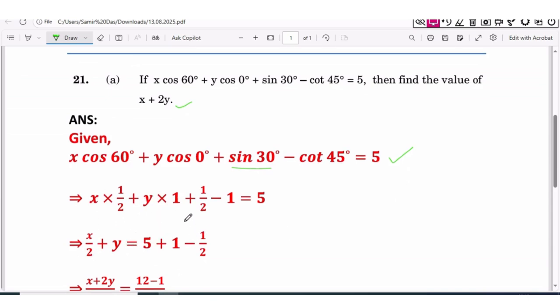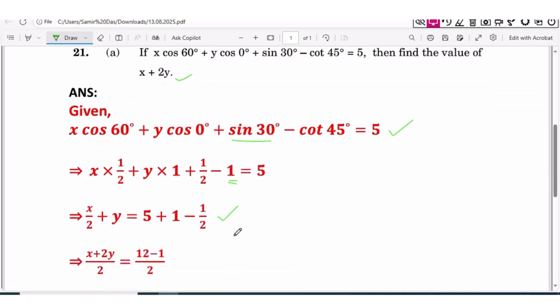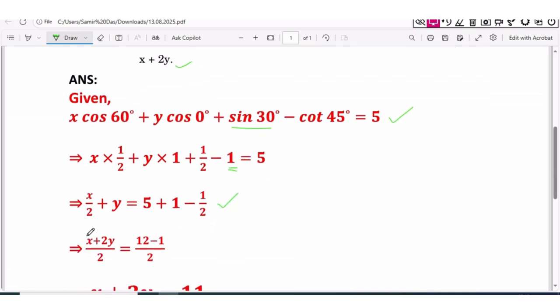So this minus 1 will be plus 1, and this plus 1/2 will be equal to minus 1/2. Now simplifying, taking LCM, so (x + 2y)/2 = 5 + 1 - 1/2.